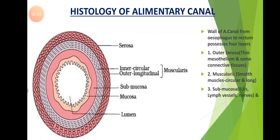Below the muscularis externa, there is one more layer called as submucosa. This submucosa is supplied with blood vessels, lymph vessels, and nerves.